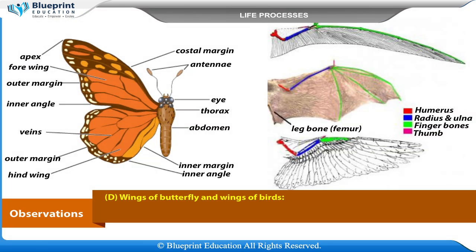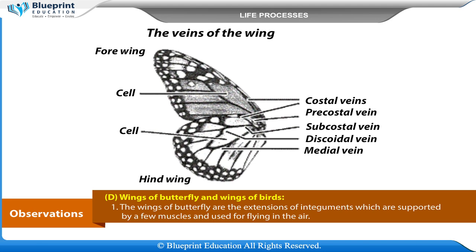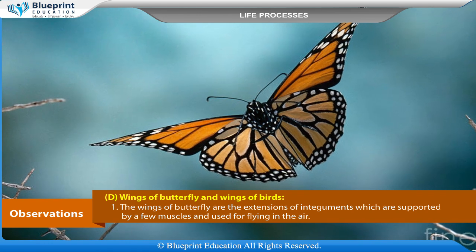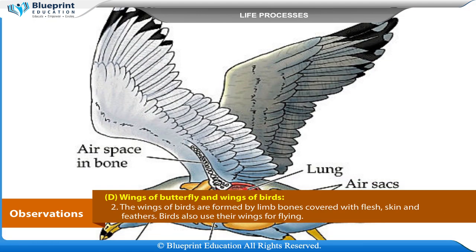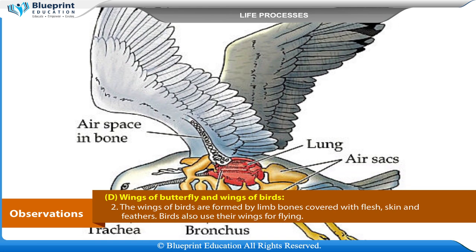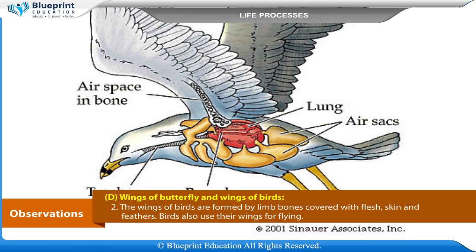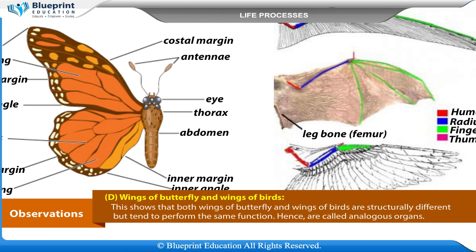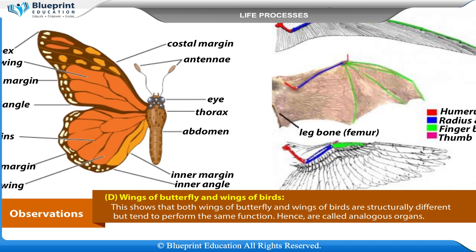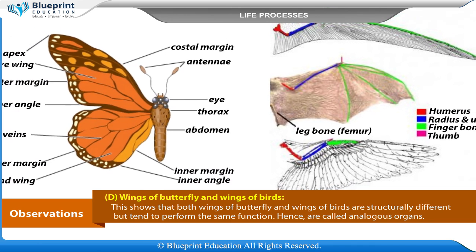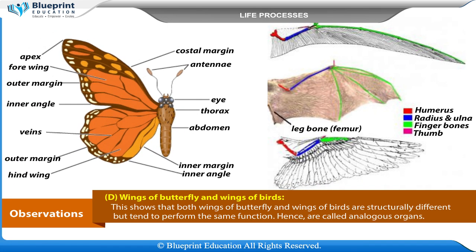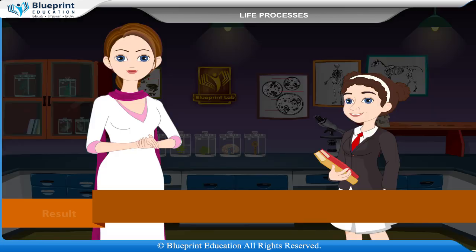Observation D: Wings of butterfly and wings of birds. The wings of a butterfly are extensions of the integument supported by a few muscles and used for flying. The wings of birds are formed by limb bones covered with flesh, skin, and feathers. Birds also use their wings for flying. Both wings of butterfly and wings of birds are structurally different but perform the same function, hence they are called analogous organs.